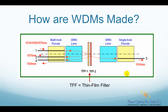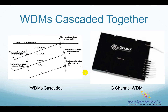We just talked about a 3-channel WDM device. Thin film filter-based WDMs can be cascaded together to get higher channel counts, such as 4, 8, 16, and 32 channels. The picture on the right shows the 8-channel WDM device, and the picture on the left shows how it's made by cascading several WDMs together.